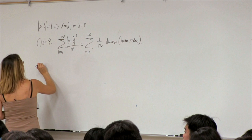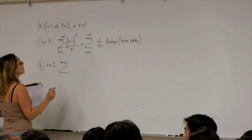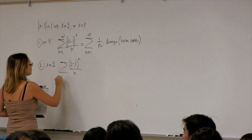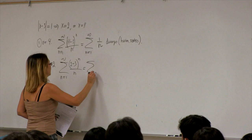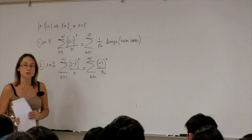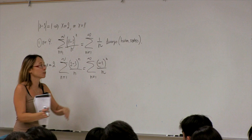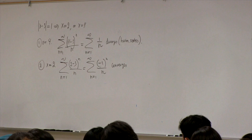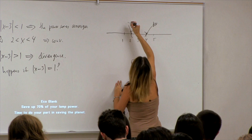The second case is x equals 2. We have (2−3)^n / n, and 2−3 equals −1, so we get (−1)^n / n. This is the alternating harmonic series — the sister of the harmonic series — which converges. So at x=4 we have divergence and at x=2 we have convergence.